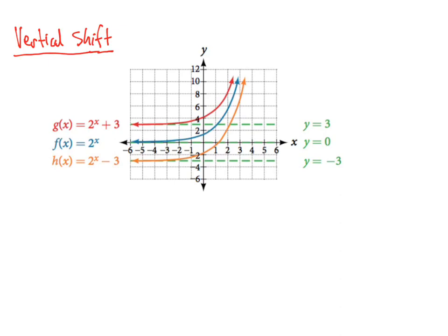Let's first look at how we can transform a function vertically. The initial function — the parent function — is f of x is equal to 2 raised to the x, and it always passes through (0, 1). If we add 3 at the end, that's going to raise the function 3 units. If we subtract 3, that's going to lower the function vertically by 3 units. The horizontal asymptote also shifts — on the parent function it's y equals 0, but if we add 3, the horizontal asymptote becomes y equals 3. Conversely, y equals negative 3 if we shift down 3 units.